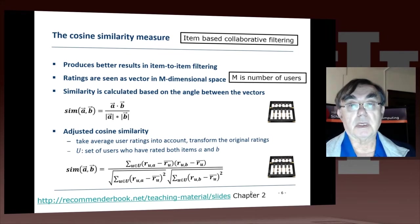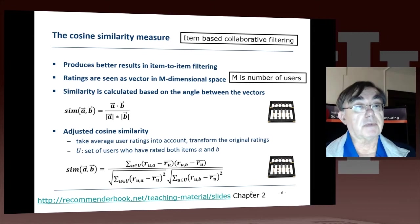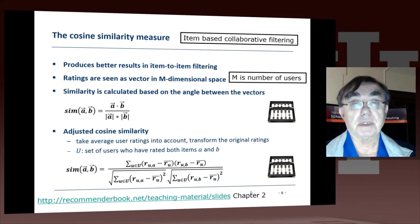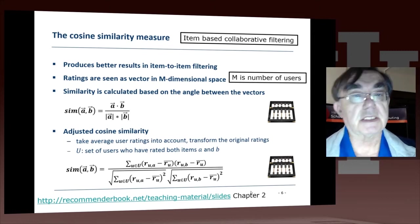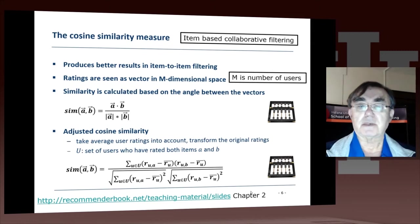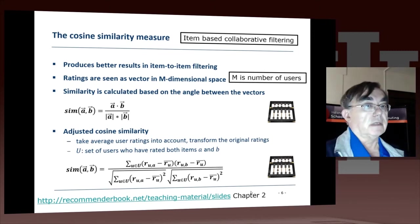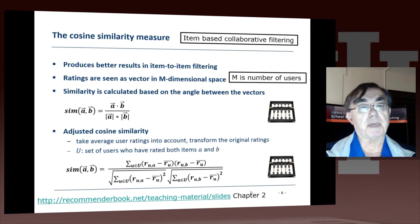As always, these items live in a space of users. It's a slightly funny space in that the items are only ranked by a few users. Therefore, in calculating distances in this space, although it looks like a normal space, it isn't really because only a few of the components are known. The components in this space are the rankings. That's true in both item-based and user-based.